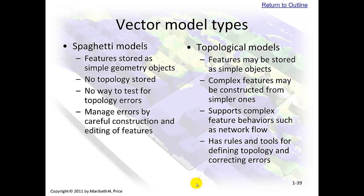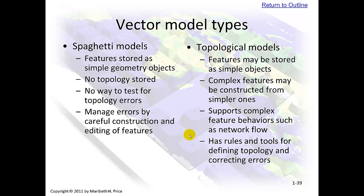Vector model types. There are two: spaghetti models and topological models. Spaghetti models store features as simple geometry objects with no topology and no way to test for topology errors — we manage errors by careful construction and editing. Topological models allow complex features to be constructed from simpler ones, supporting complex feature behaviors such as network flow, with rules and tools for defining topology and correcting errors.